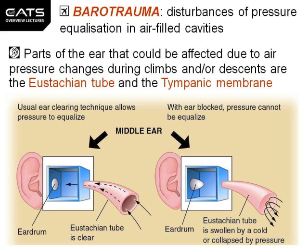Let's say we've been flying for some time at altitude at the lower pressures aloft. Since we've been up there some time, the pressure outside our ear and the pressure inside our middle ear will have equilibrated via the eustachian tube and will be the same.